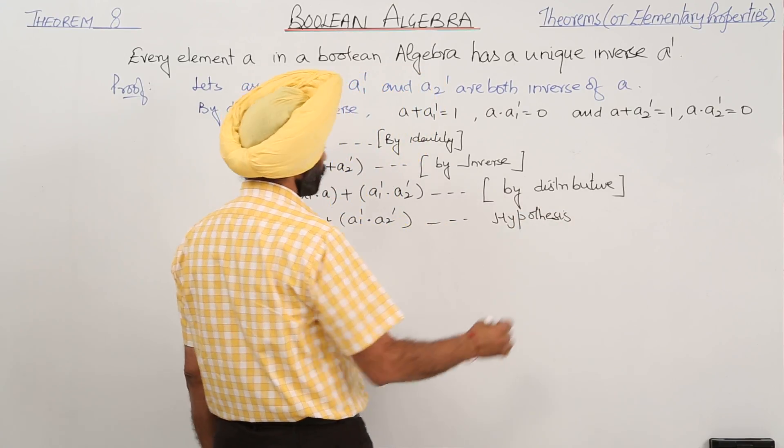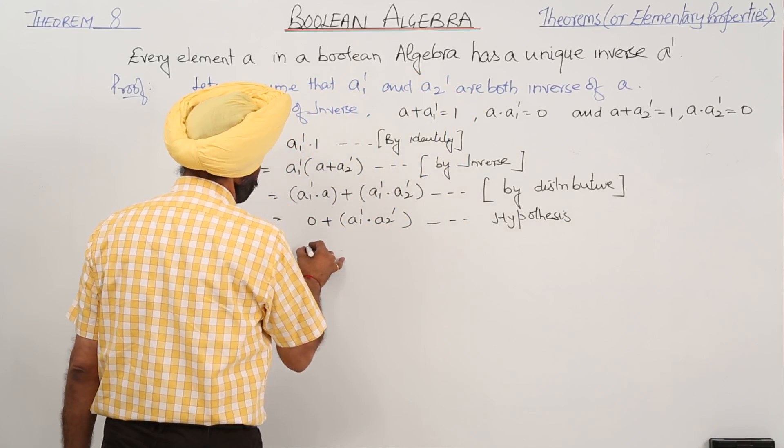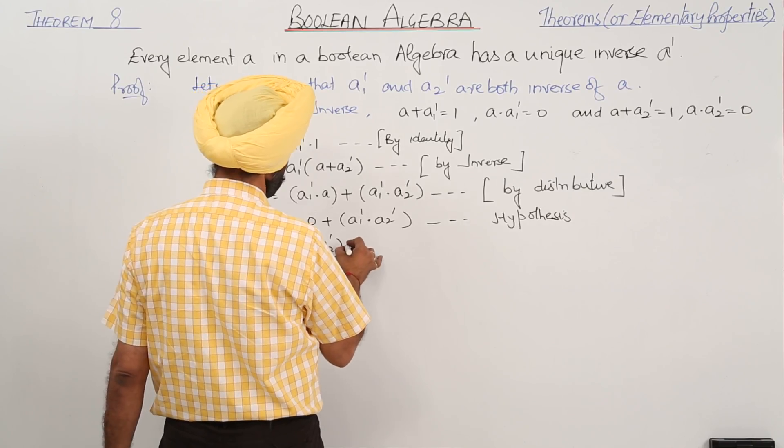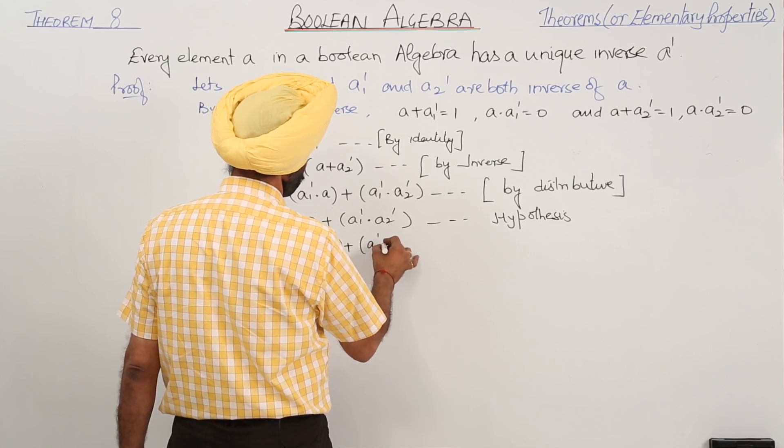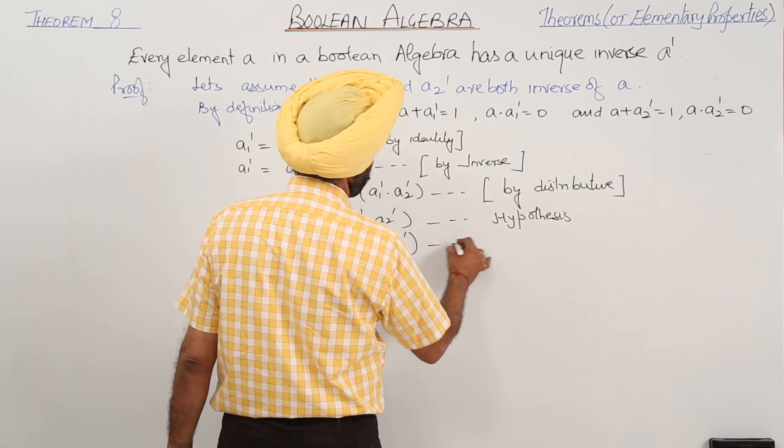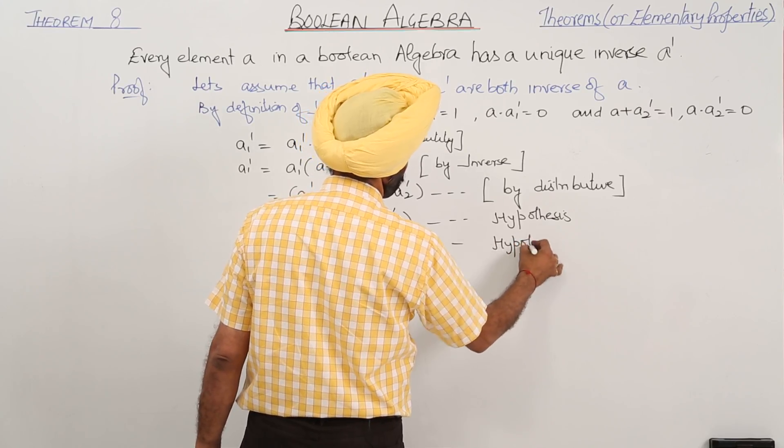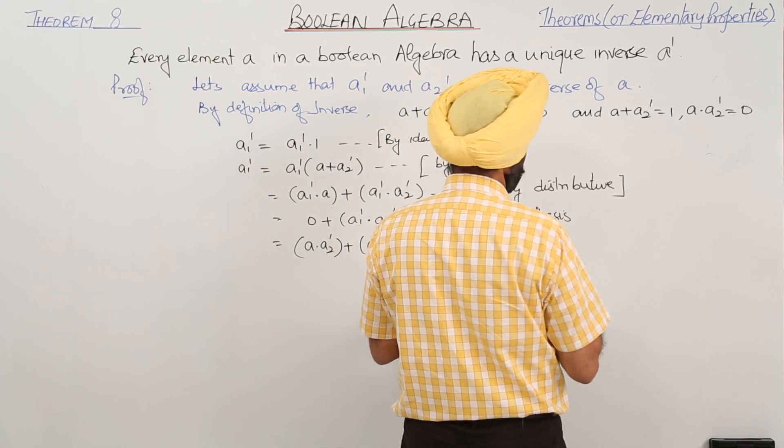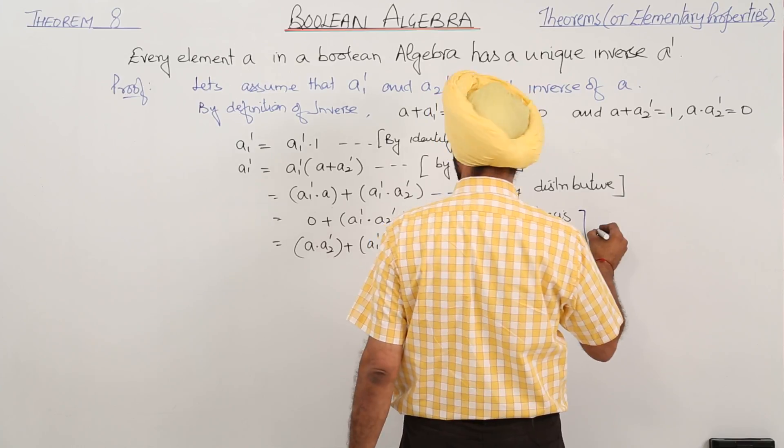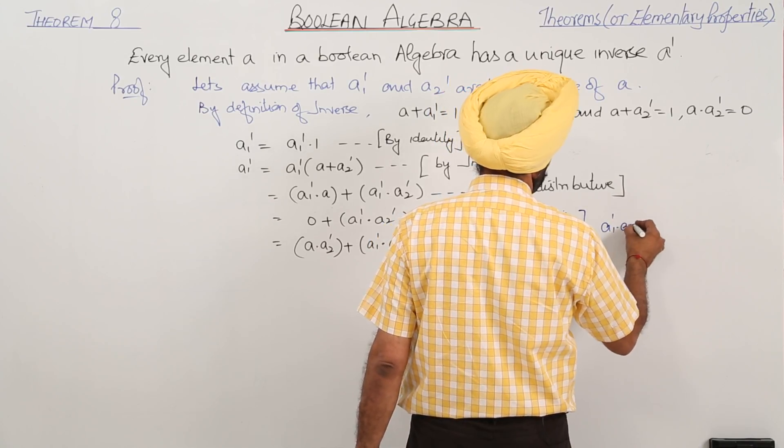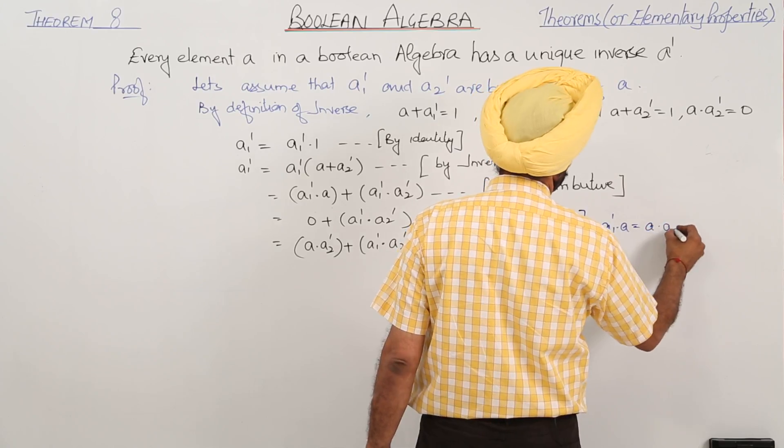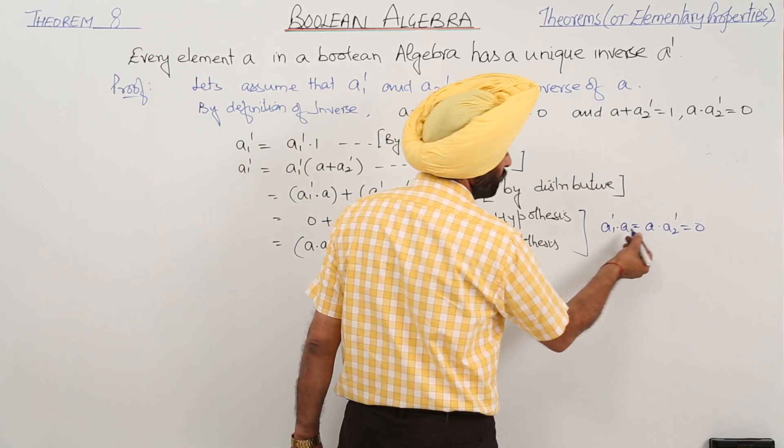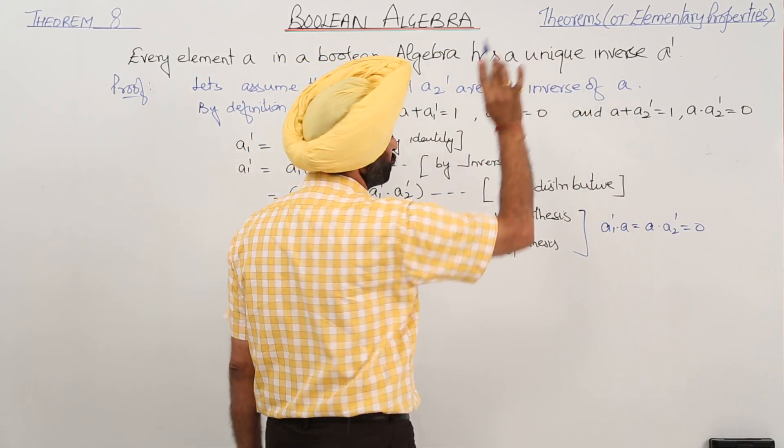This becomes hypothesis. We can even write it now as A dot A2 inverse plus A1 inverse dot A2 inverse. Here what we are having: for this part we have A1 inverse dot A equals A dot A2 inverse equals 0, because A1 and A2 both are the inverse of A.